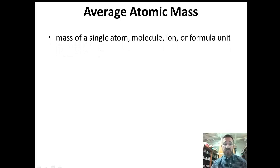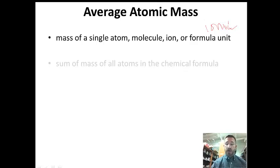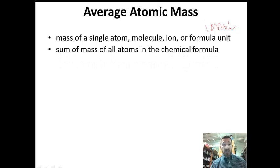Average atomic mass is the mass of a single atom, molecule, ion, or formula unit. Formula unit just means something that's ionic. It's the sum of the masses of all the atoms in the chemical formula, and it's in AMUs.